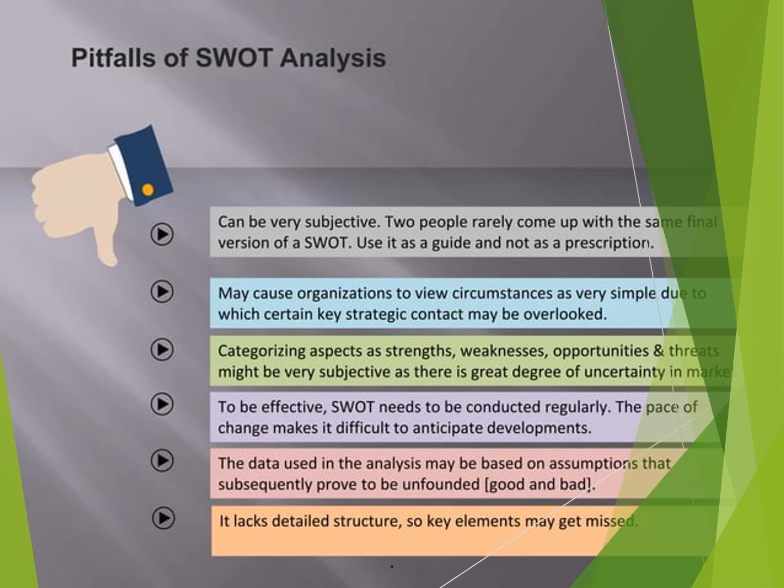The limitations of SWOT analysis include: it can be very subjective; it may cause an organization to view circumstances as too simple, causing key strategic context to be overlooked; categorizing aspects as strength, weakness, opportunity, or threat can be subjective given the great degree of uncertainty in the market. To be effective, SWOT needs to be conducted on a regular basis. The data used may be based on assumptions that subsequently prove unfounded, and the data used is not always checked and controlled. It also lacks detailed structure.